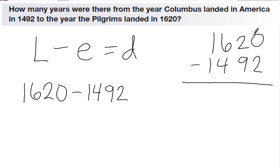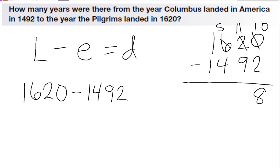This will tell me how many years there are between the two events. I need to borrow: 10 minus 2 is 8. Borrow again: 11 minus 9 is 2. And 5 minus 4 is 1, and 1 minus 1 is 0. So there were 128 years between these two events.